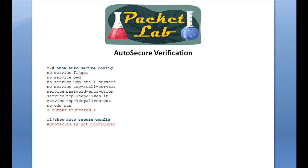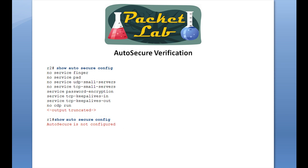If issued on a router where auto secure has been configured, it will show you the configuration commands that were implemented by auto secure at the time it was run. It's truncated here, but it's generally going to be quite a list. We'll see this on the command line — keep this in mind for the real world.